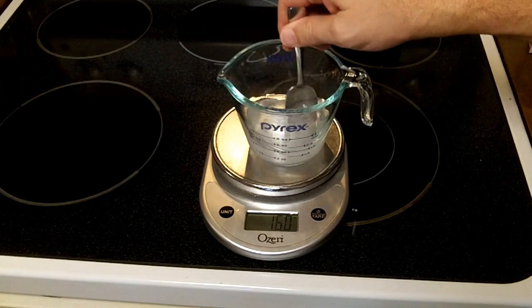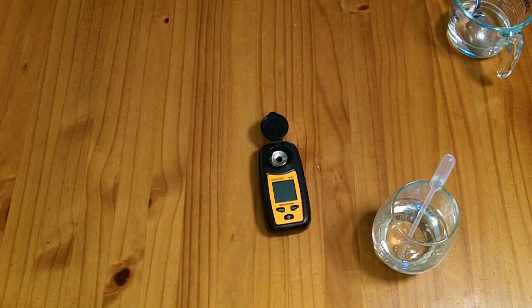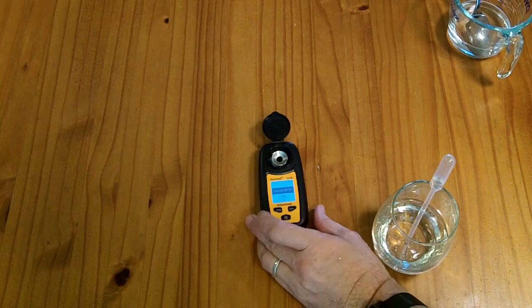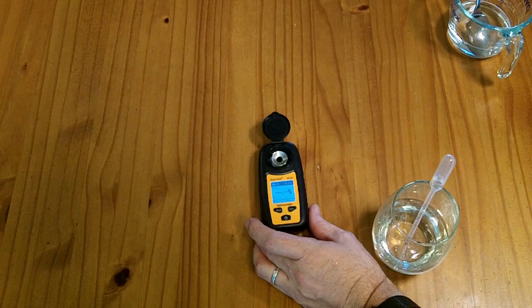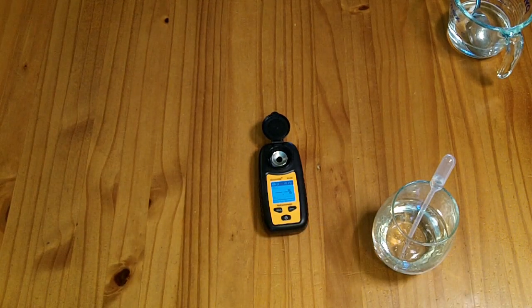So this should be a 10% brix solution once we actually get it dissolved. All right, we turned it on. It's set up there. We need to zero the meter.